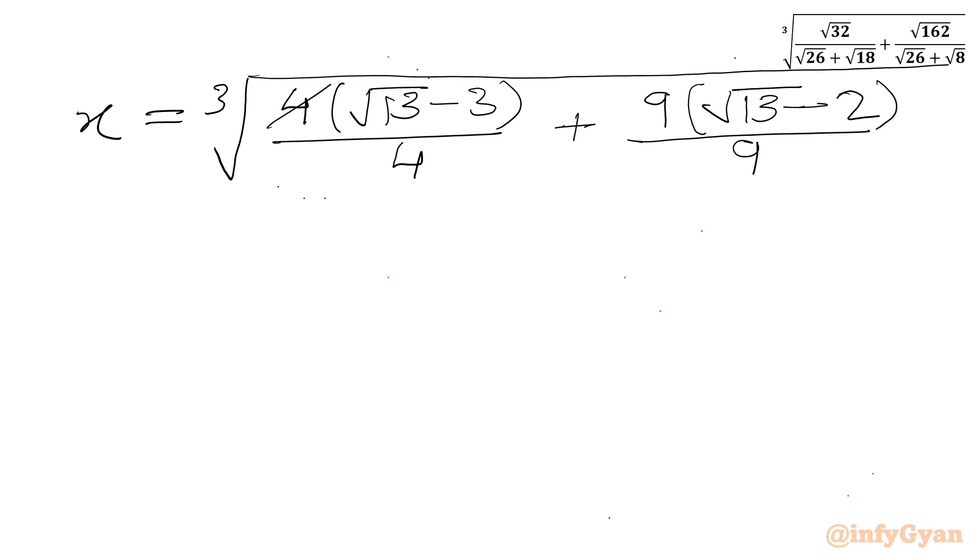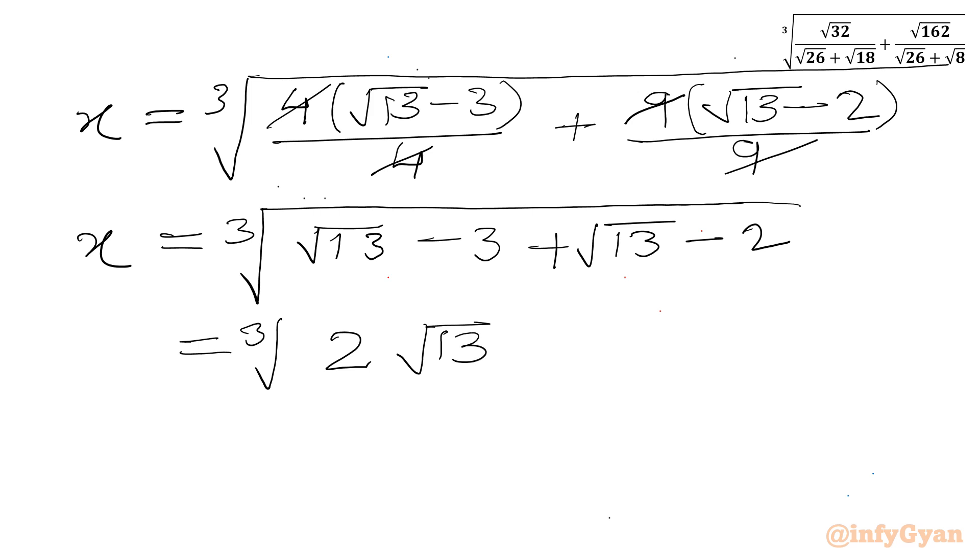Now I will cancel 4 with 4, 9 with 9. So x will become cube root of root 13 minus 3 plus root 13 minus 2 or cube root of 2 root 13 minus 2 minus 3 it is minus 5.